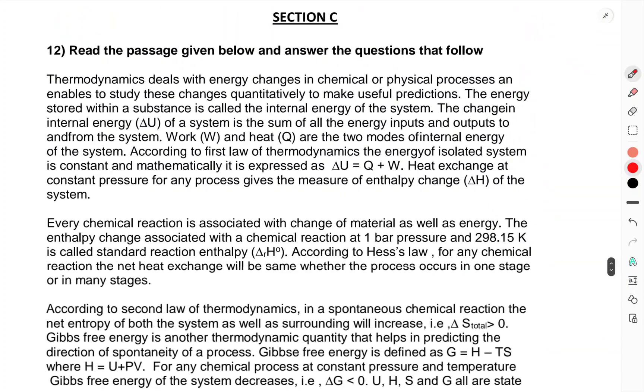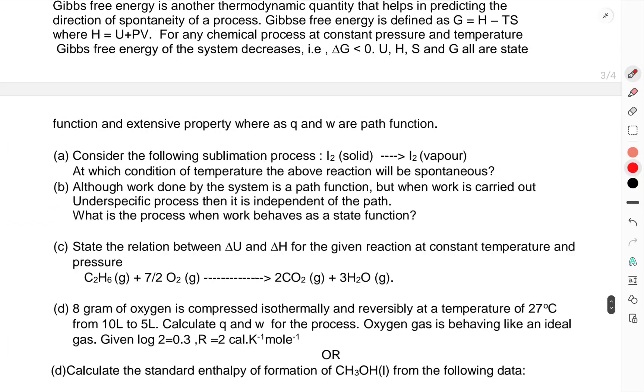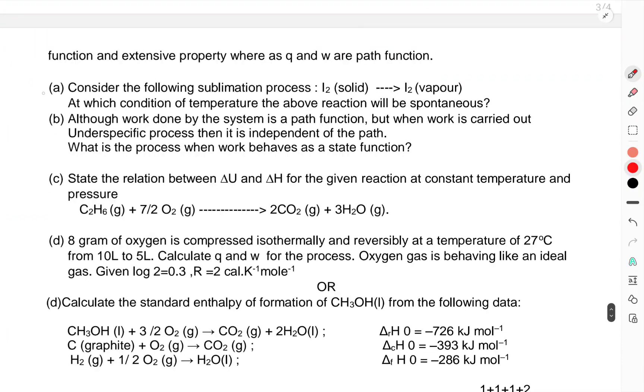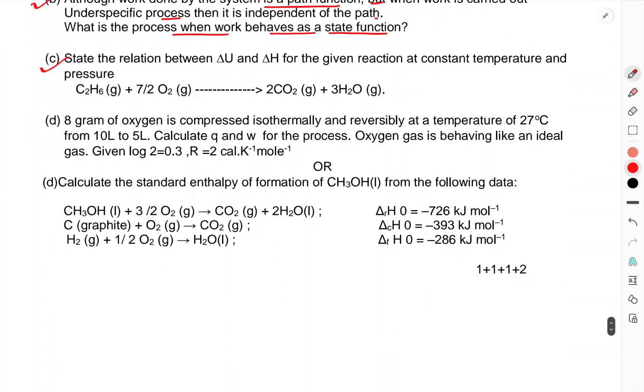Section C: This is a case study based question. You have to read yourself. I have just read the questions. Consider the following sublimation process: I2(solid) → I2(vapour). At which condition of temperature will the reaction be spontaneous? Although work done by the system is a path function, when work is carried out under specific process, then it's independent of the path. What is the process when work behaves as a state function?